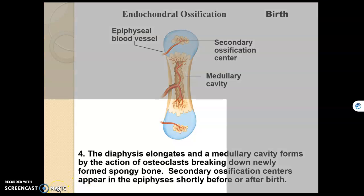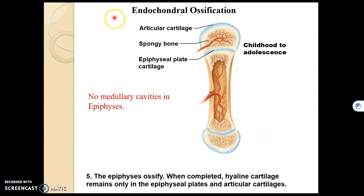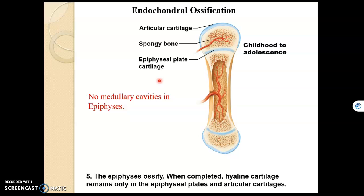What we're left with in endochondral ossification: the primary ossification center — the diaphysis — has compact bone on the edges with a medullary cavity in the interior. The secondary ossification centers — the epiphyses — have compact bone on the edges with spongy bone in the interior. What's left over of hyaline cartilage is articular cartilage at the ends of long bones, and the epiphyseal plate, which is a growth plate in children. This growth plate will seal into bone once the child or adolescent stops growing, at which point it is called the epiphyseal line.